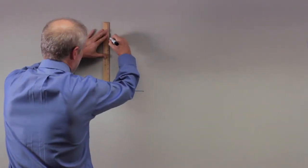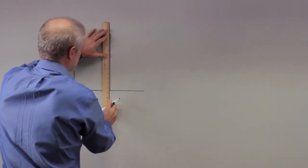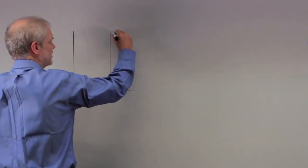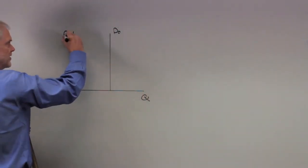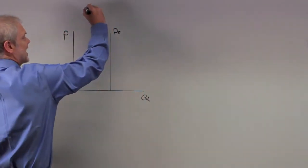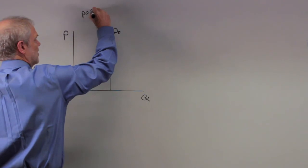So here's the demand curve, we'll call this D0, here's quantity, here's price. This is a perfectly inelastic demand curve. Let's write it down: perfectly inelastic demand curve.